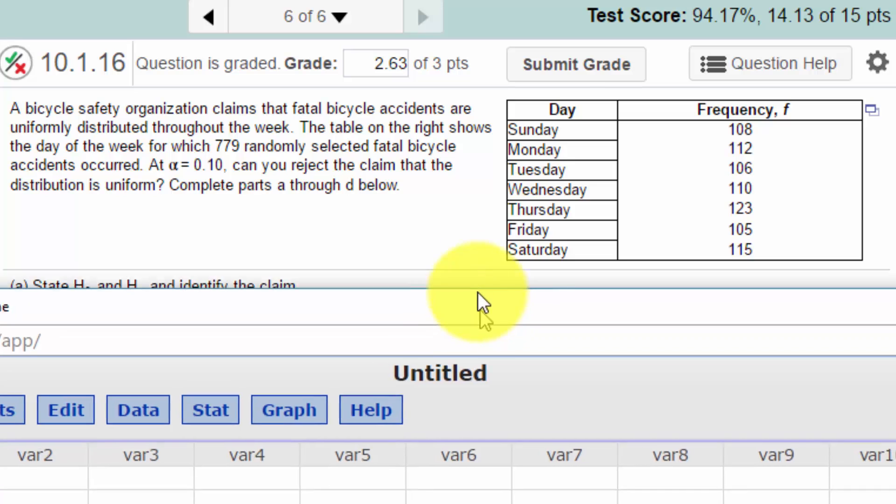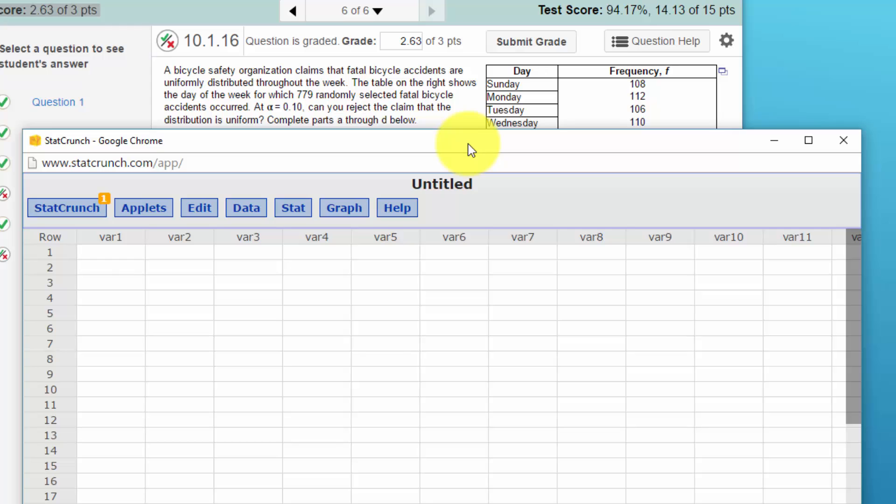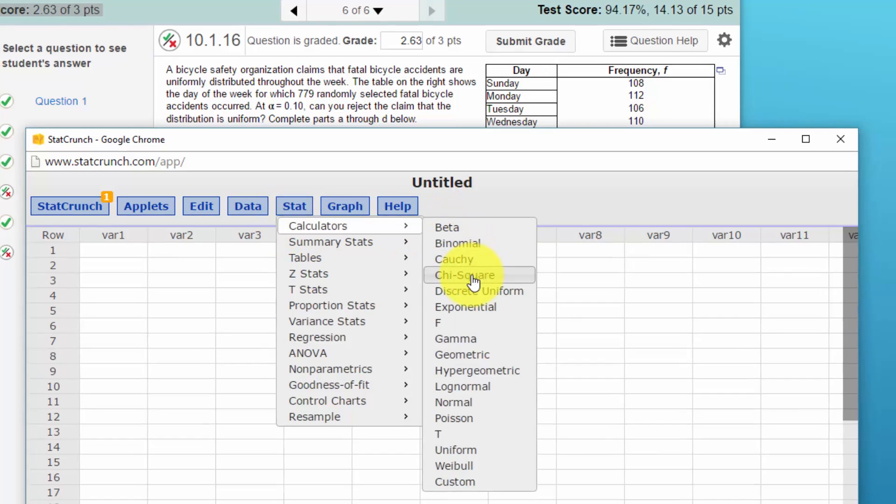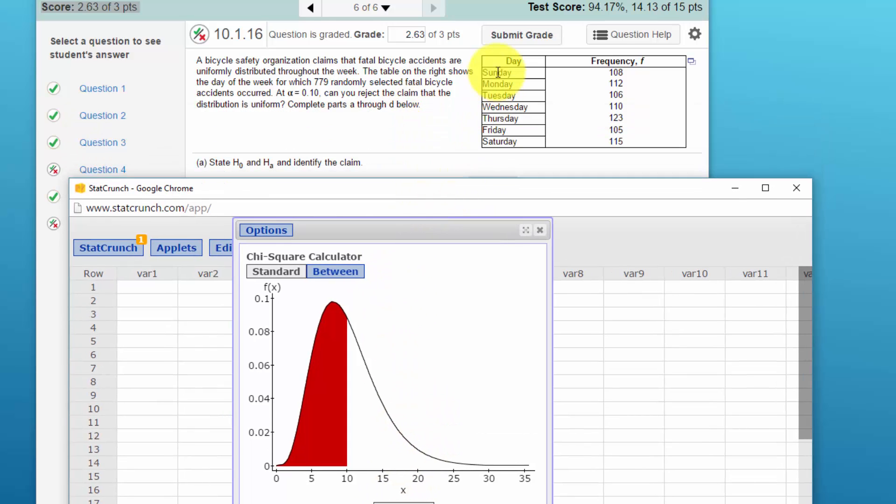Okay, I'm going to bring up StatCrunch and we want to find our critical value of Chi-Square. We go into stat, calculators, and we look for the Chi-Square calculator. Degrees of freedom, we have seven days, seven categories, so the degrees of freedom for a test for goodness of fit is just the number of categories minus one, which in this case would be seven minus one, would be six.